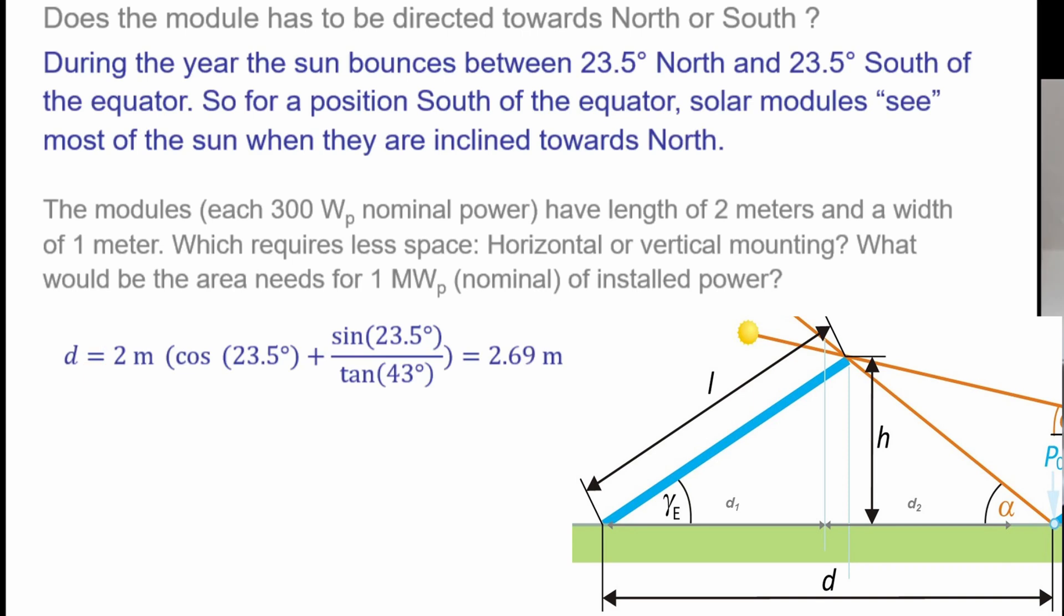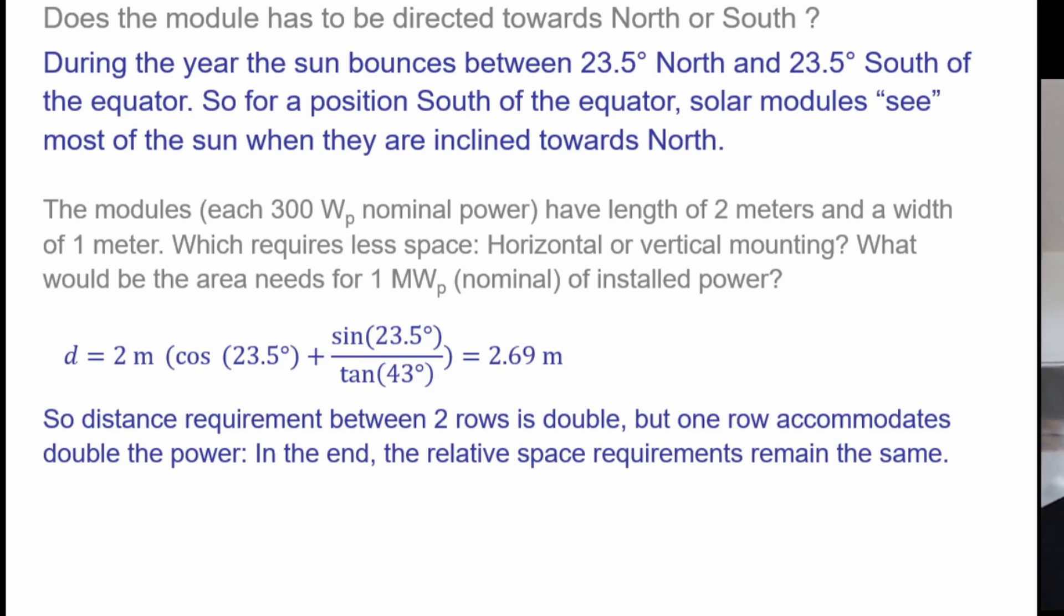And altogether we have a distance we have to keep at 2.69 meters. So the distance requirement between two rows is now double, but it accommodates the double amount of modules or double the power. At the end, this relative space requirement remains the same.